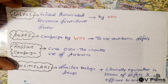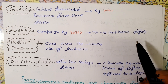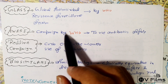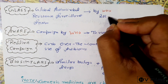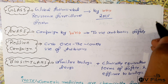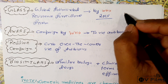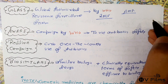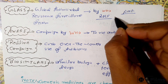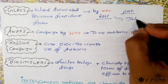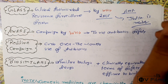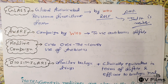GLASS stands for Global Antimicrobial Resistance Surveillance System. It was launched by the WHO in 2015. Its aim is to support global surveillance and research to strengthen the evidence base on antimicrobial resistance (AMR), and to inform decision-making for global action. India has enrolled itself as a member.